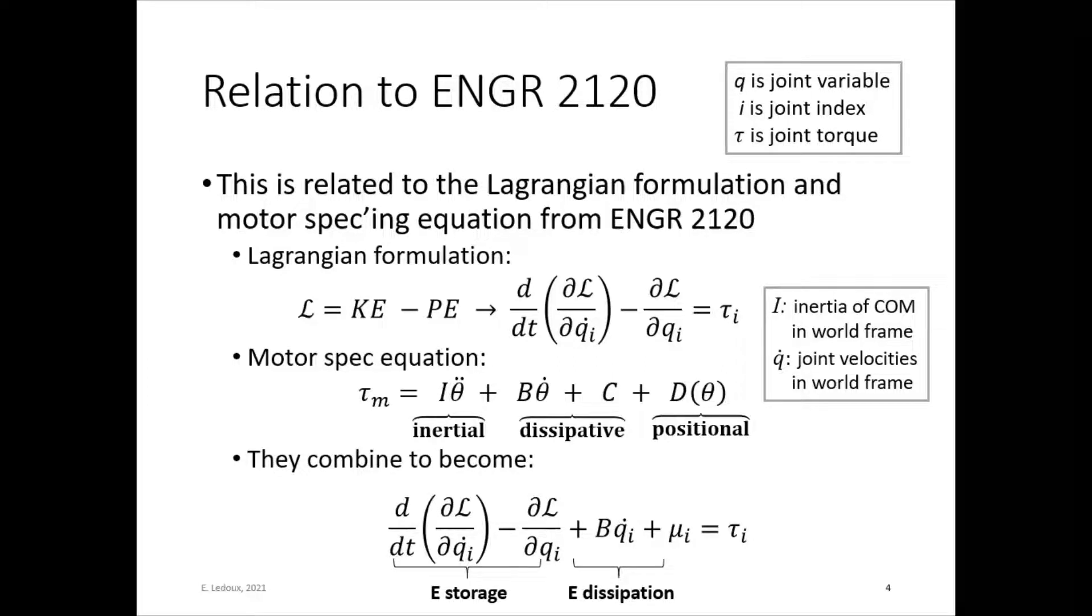These combine into the Lagrange equation, so you can get d/dt(∂L/∂q̇) - ∂L/∂q + Bq̇ + μ = τ. So the energy storage combines with the energy dissipation, and you get total torque required.